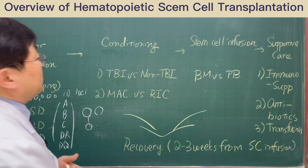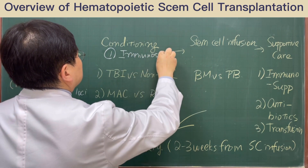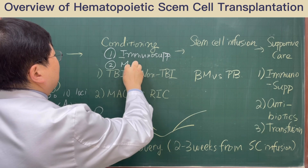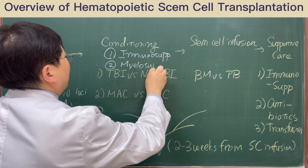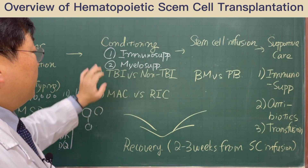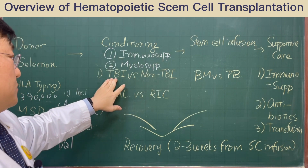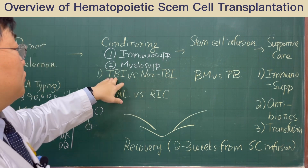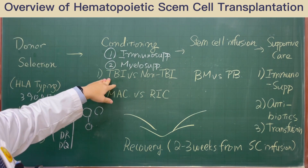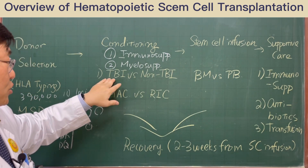When using this conditioning, we can expect two kinds of functions. The first is immunosuppression to prevent graft rejection. The second is myelosuppression, meaning the removal of malignant cells from the marrow. We can classify conditioning into two types: TBI-containing conditioning versus non-TBI conditioning. When we use a TBI-containing regimen, it consists of radiation plus drug treatment.